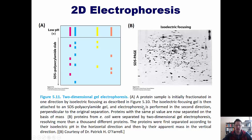In this case, proteins from E. coli were separated by two-dimensional gel electrophoresis, resolving more than a thousand different proteins. The proteins were first separated according to their isoelectric pH in the horizontal direction and then by their apparent mass in the vertical direction. You can see that right here. They separate it out one way, rotate it 90 degrees, separate it out another way. Interpreting these 2D gels is probably pretty tricky.